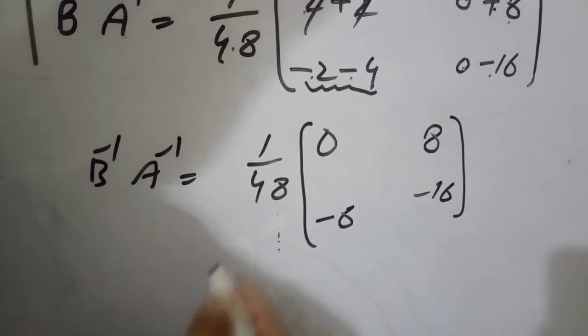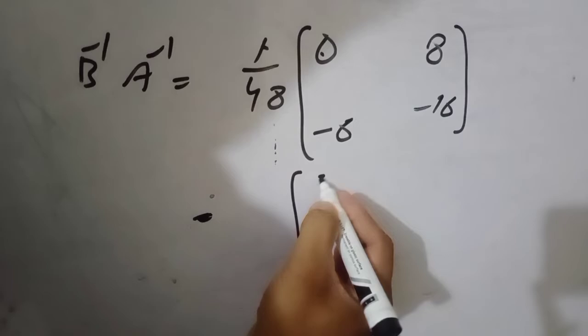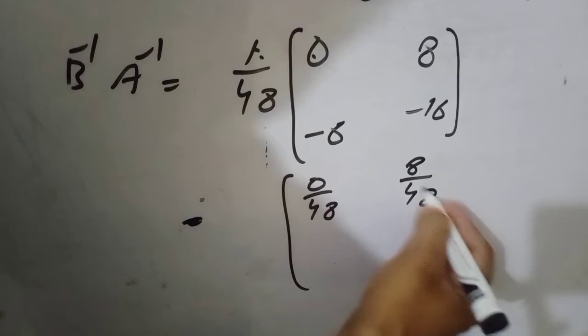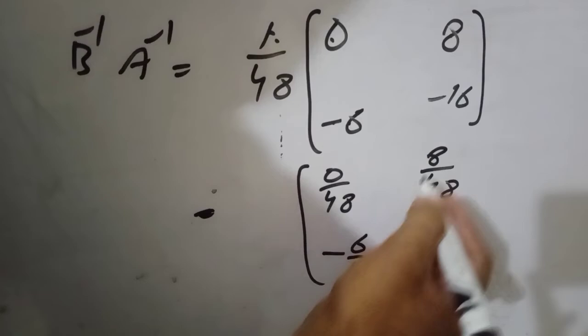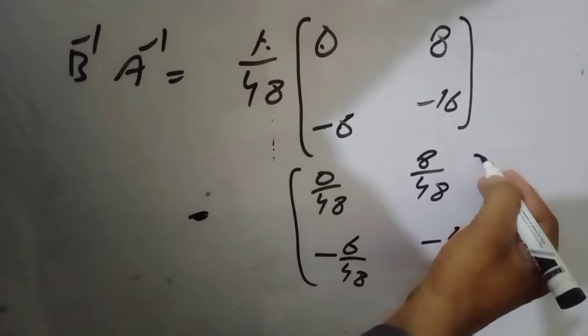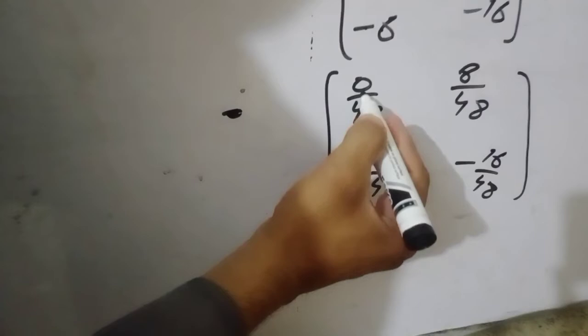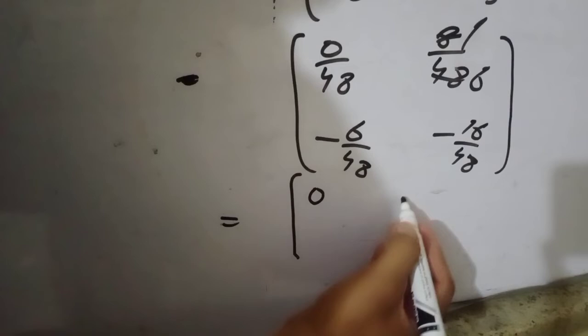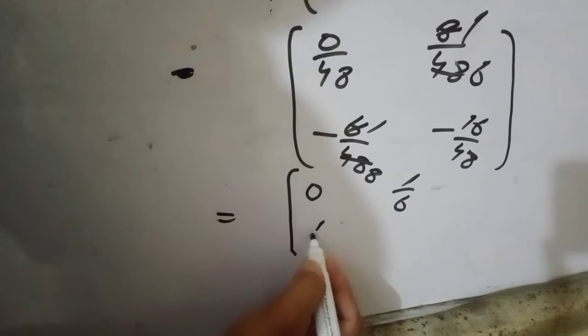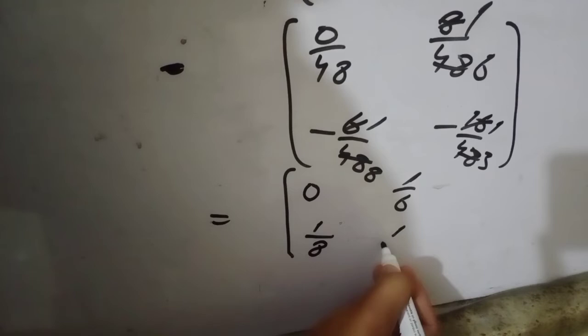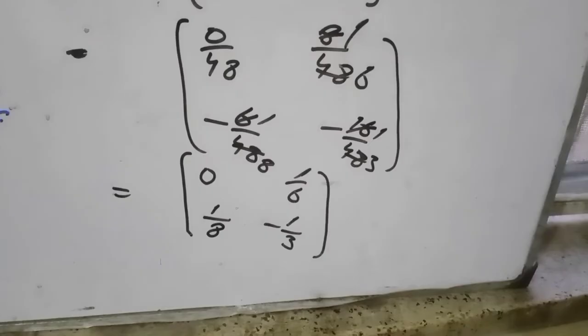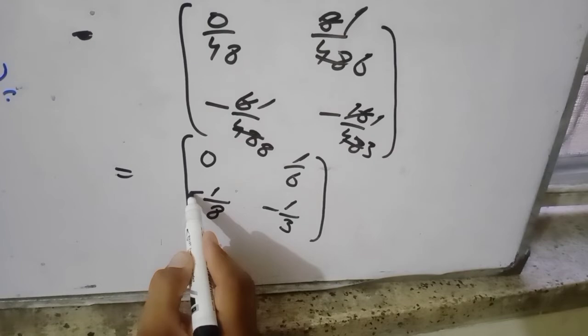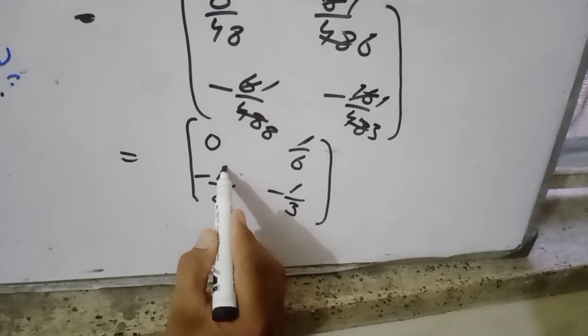1 over 48 को अंदर multiply करेंगे: 0 over 48 = 0; 8 over 48; minus 6 over 48; minus 16 over 48. अब cutting करेंगे: 0÷48 = 0; 8÷48 = 1/6; minus 6÷48 = minus 1/8; minus 16÷48 = minus 1/3. B inverse A inverse = matrix [0, 1/6; minus 1/8, minus 1/3].